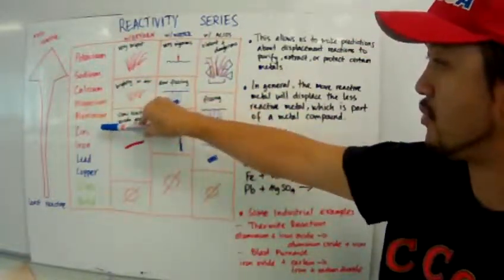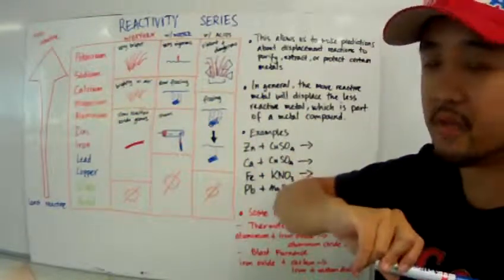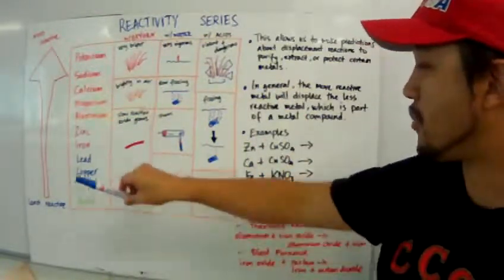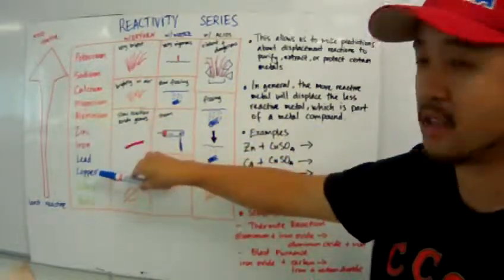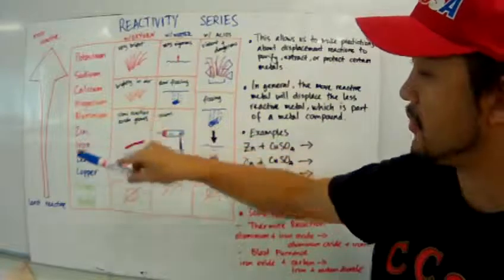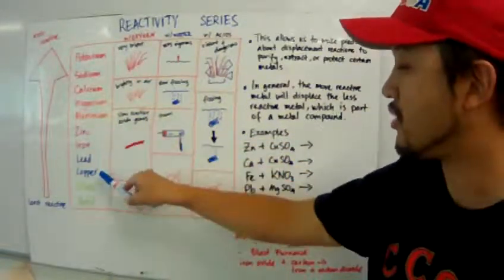you can find it in the middle of the reactivity series. And copper is all the way down there. Zinc is more reactive than copper. And copper is less reactive than zinc. So, because zinc is more reactive than copper,